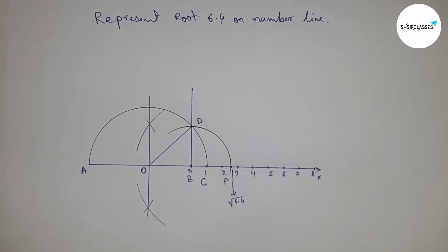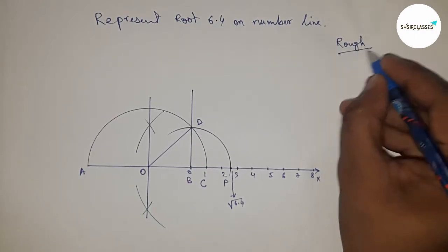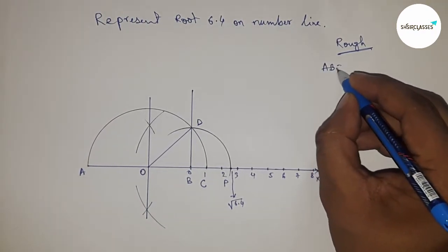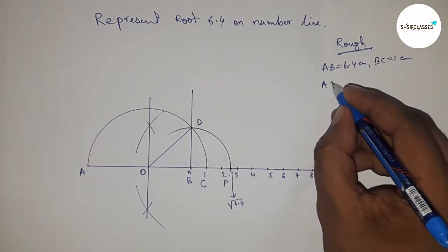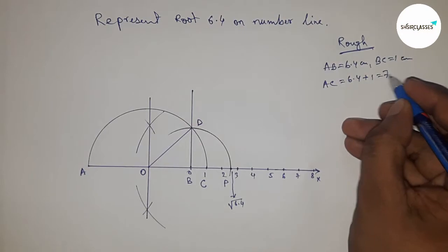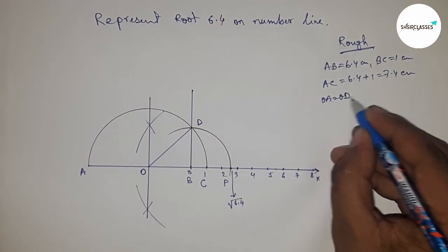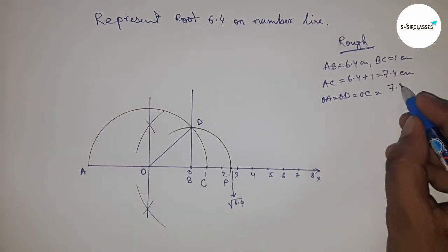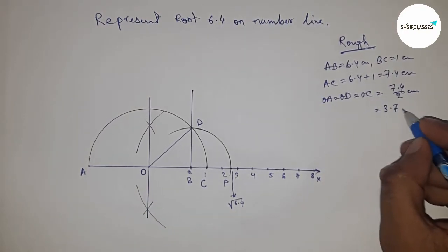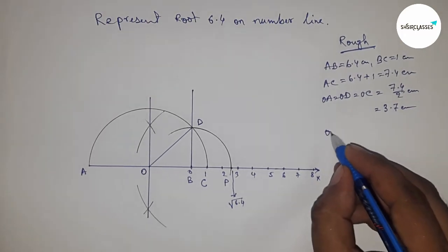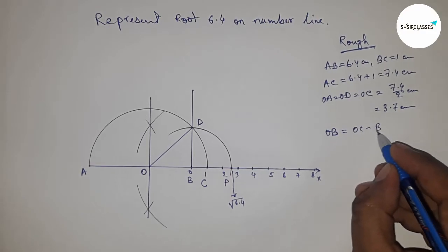Now, roughly discussing the calculation of root 6.4. Given: AB equals 6.4 centimeters, BC equals 1 centimeter, so AC equals 6.4 plus 1, which equals 7.4 centimeters. Now radius OA, OD, and OC equal 7.4 by 2 centimeters, which equals 3.7 centimeters. Now OB equals OC minus BC, and putting the value of OC and BC and calculating this, so this is 2.7 centimeters.